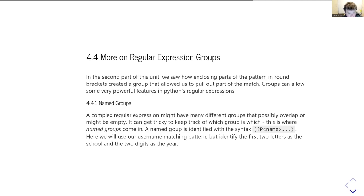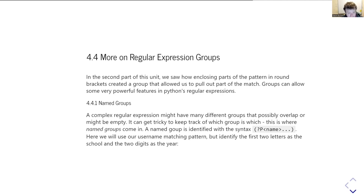The problem with this is that if you have a lot of different sub-parts of the pattern you want to match, it can get a little bit tricky to keep track of which part of the pattern goes with which number in the groups method. One way around this is, instead of relying on the order of your match groups in the pattern, you can actually give them a name.